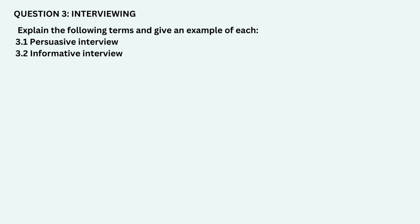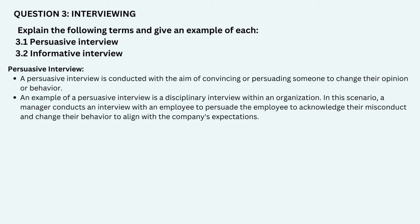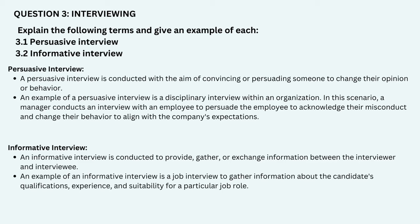Explain the following terms and give an example of each. 1. Persuasive interview — a persuasive interview is conducted with the aim of convincing or persuading someone to change their opinion or behavior. An example is a disciplinary interview, where a manager conducts an interview with an employee to persuade the employee to acknowledge their misconduct and change their behavior to align with the company's expectations. 2. Informative interview — an informative interview is conducted to provide, gather, or exchange information between the interviewer and interviewee. An example is a job interview conducted to gather information about the candidate's qualifications, experience, and suitability for a particular job role.